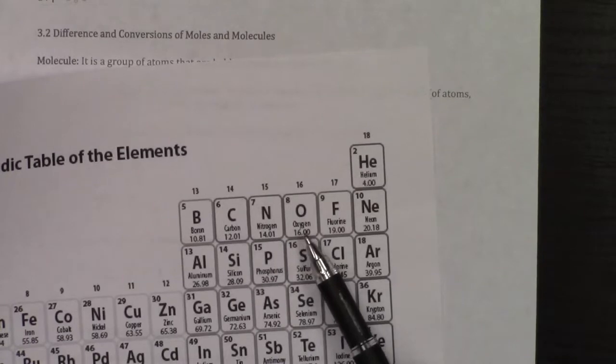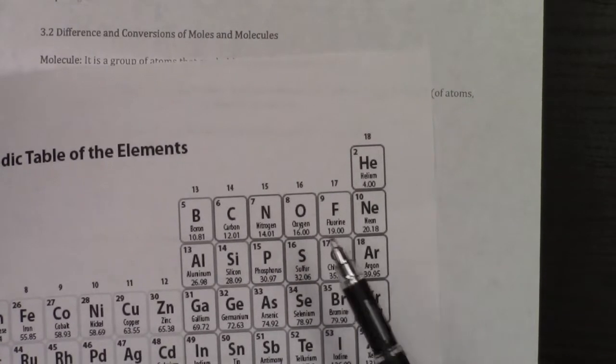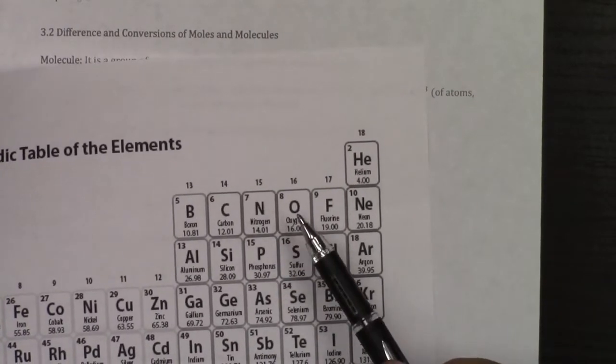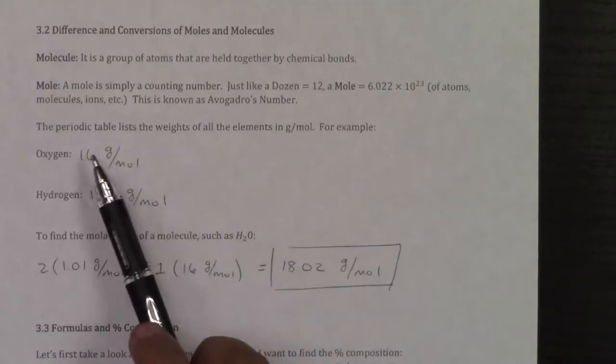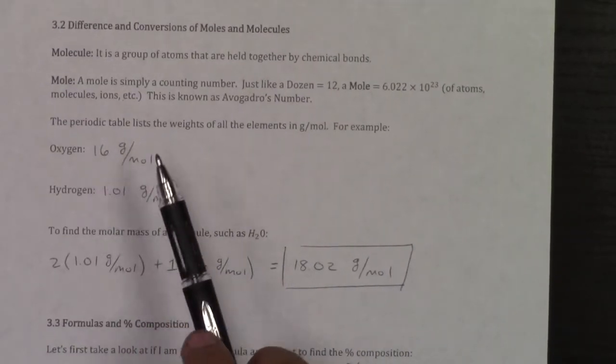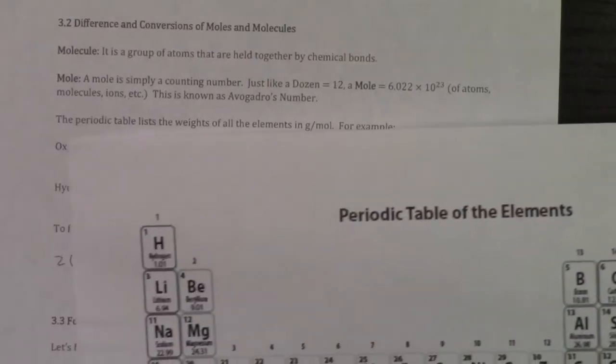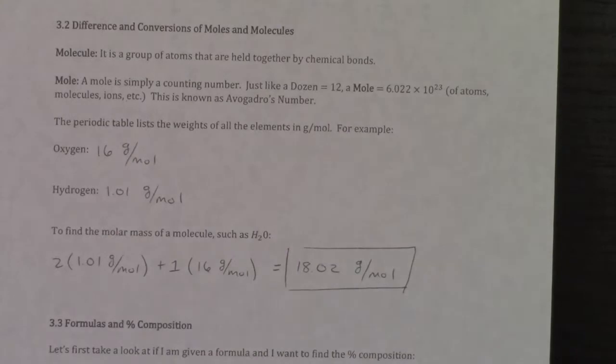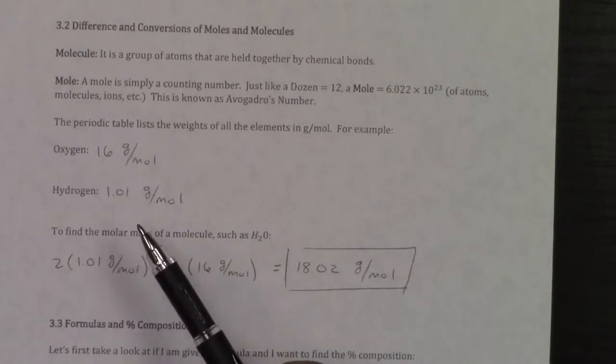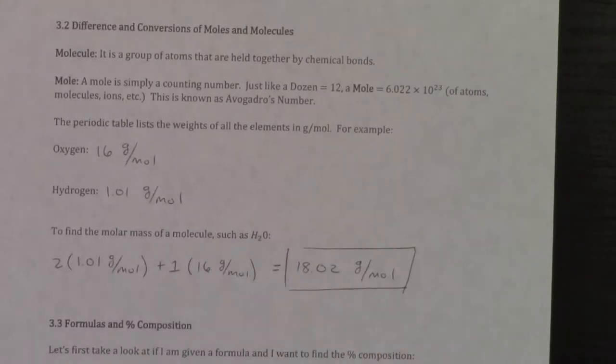So if I take a look at oxygen, this number 16 says that if I have a mole of oxygen atoms it would weigh 16 grams. So oxygen is going to be 16 grams per mole. And then if I looked at hydrogen, that's going to be 1.01 grams per mole.